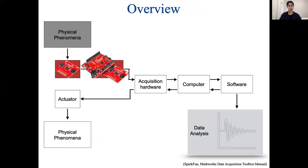Signal conditioning can happen at many different stages of the data acquisition process. Some sensors can do signal conditioning even before the signal moves through the wire. In our lab, the microcontroller and the accelerometer can both be involved in this process, and we might also do it later on in the data analysis stage. It's important to understand that there's not just one device that can do signal conditioning — there can be many, and it can happen at many different stages.